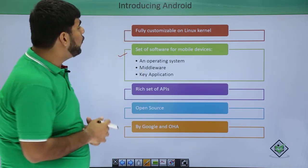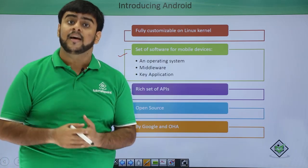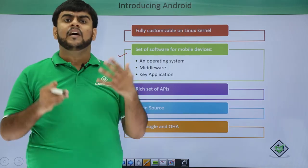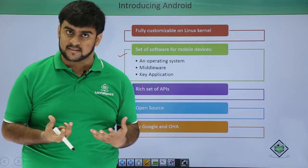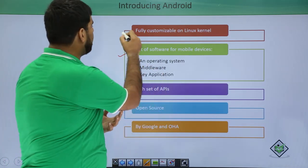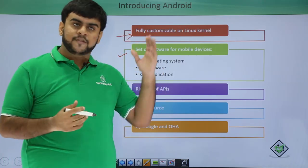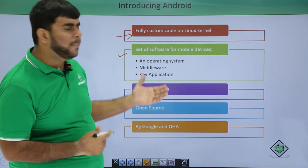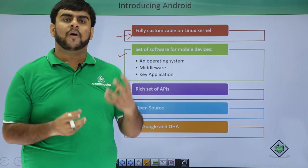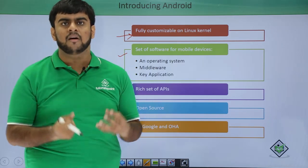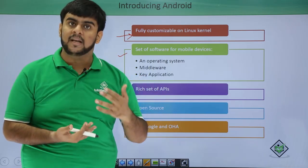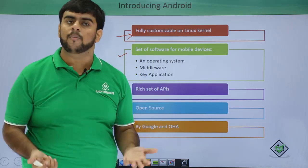The next point is a fully customizable Linux kernel. We have been hearing this term for quite some time now. Android is based on Linux. What do we mean by based on Linux? We actually define the Android OS based on a kernel which is a Linux kernel. This we would understand deeply when we study the architecture of Android in upcoming sessions. But to put it very shortly, the entire base of Android is a Linux kernel which is very stable and belongs to the open source community.